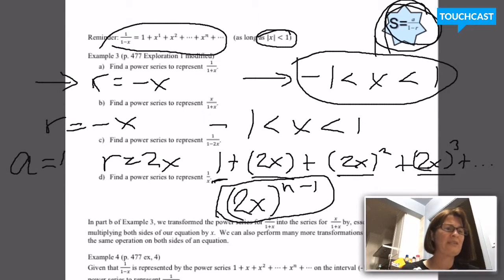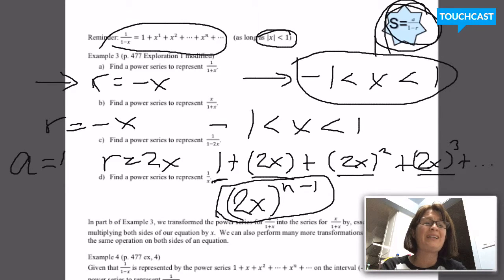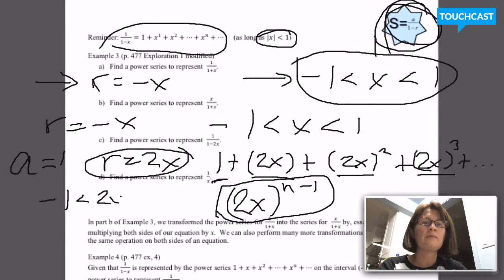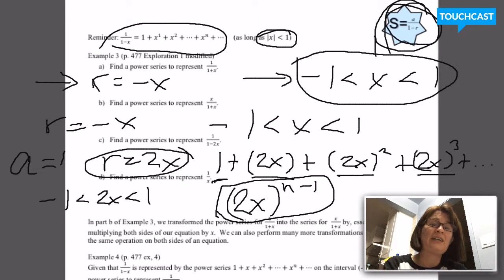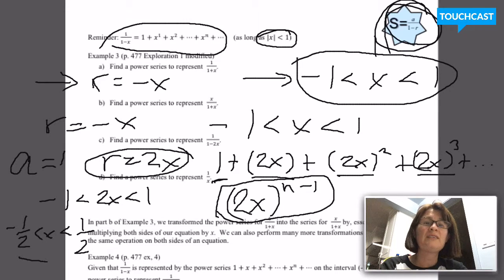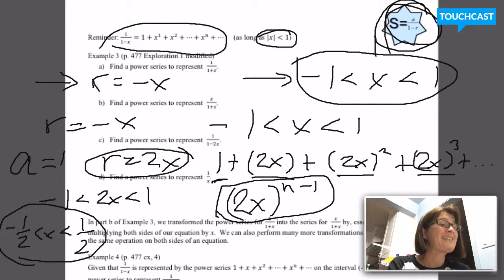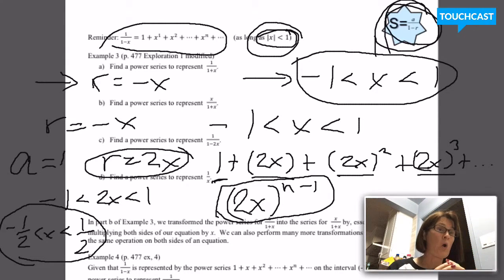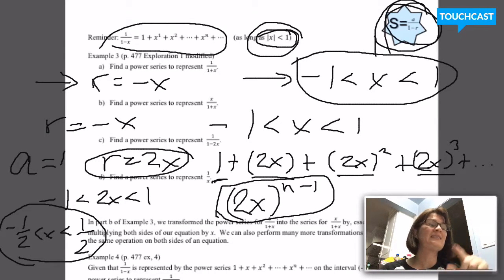Now I want to find the interval of convergence. The rule is that R has to be between negative 1 and 1, and I know R is equal to 2x. So I write the inequality: negative 1 is less than 2x, which is less than 1. I can solve that inequality for x by dividing everything by 2, and I get negative 1 half is less than x, which is less than 1 half. So this is the first series we wrote with a different interval of convergence. The absolute value of R has to be less than 1, and our job is just to isolate the x in the middle.